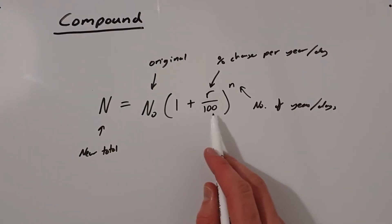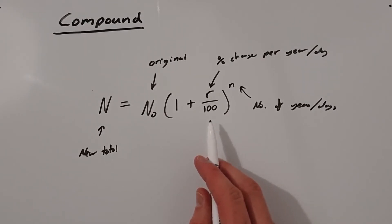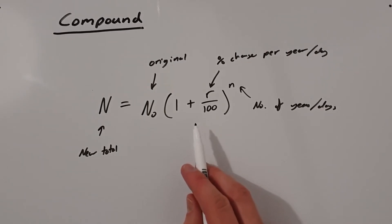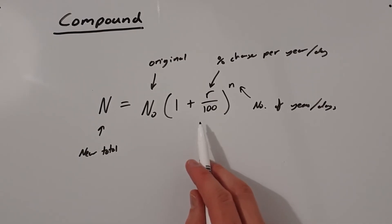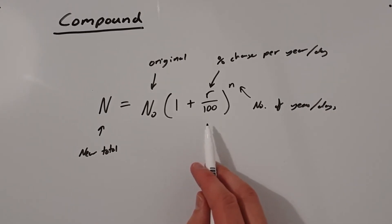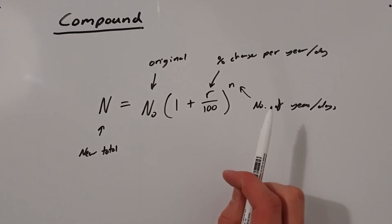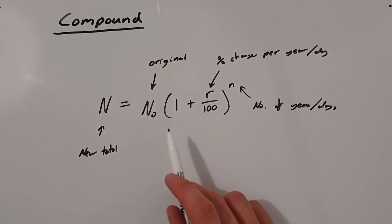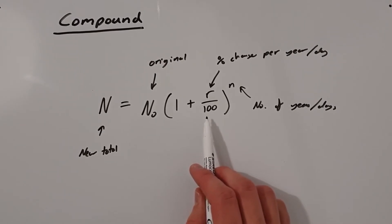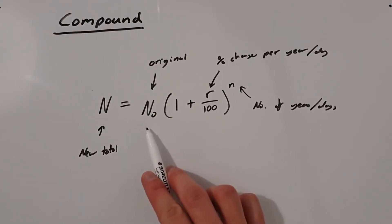This 1 + r/100 might look complicated but it's really easy. If you remember from percentage change, we multiply by decimals. The 1 represents 100%. If we wanted to increase something by 8% for example, we convert 8% to a decimal: 0.08. We add that to 1 to get 1.08, then multiply by our original amount to get our new amount. So (1 + r/100) is essentially converting our percentage change into a decimal which we then multiply by the original amount.